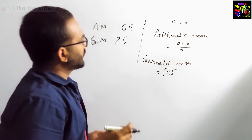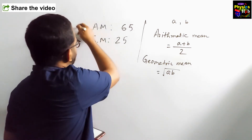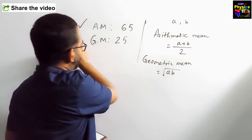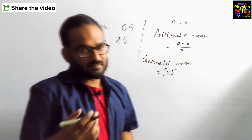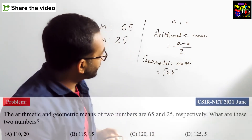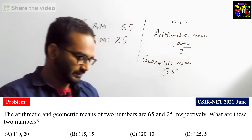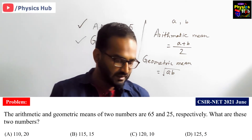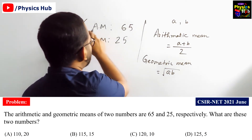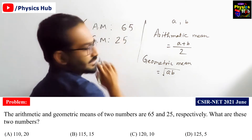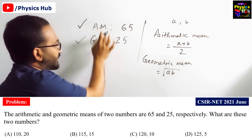We have to identify those two numbers which satisfy both conditions — arithmetic mean should give 65 and geometric mean should give 25. If you calculate (a + b) / 2 for all the options, all of them satisfy the arithmetic mean of 65. So we cannot conclude from just the arithmetic mean alone.